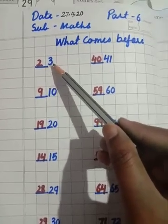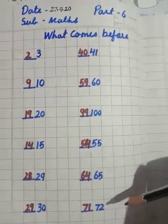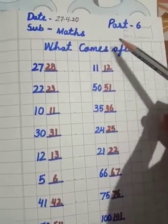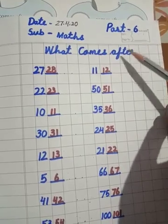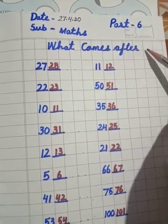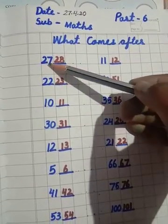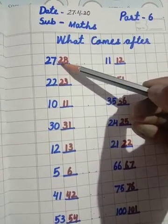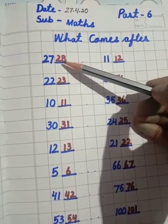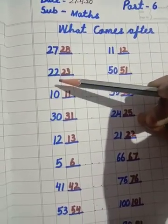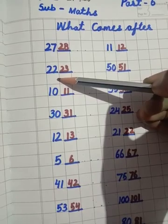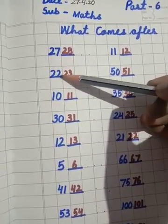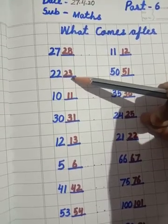Write in your notebook same. And second, what comes after? After means iske baad ka number. Twenty-seven comes after. Twenty-seven ke baad kaunsa number aata hai? Twenty-eight. Twenty-two comes after. Twenty-two ke baad kaunsa number aata hai? Twenty-three.